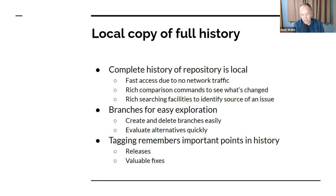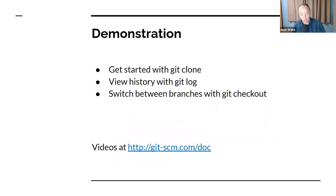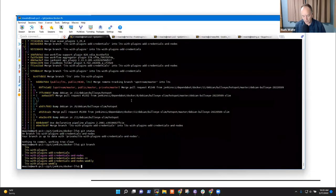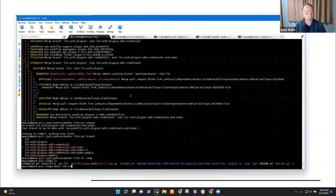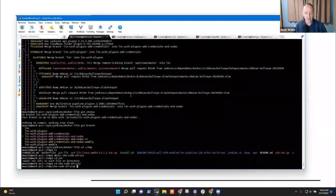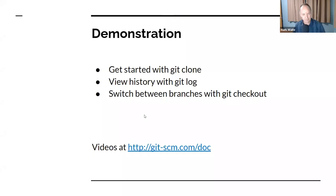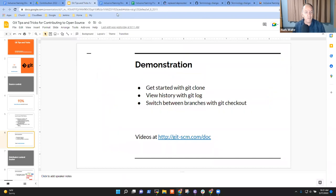Git is an interesting source control system because it provides you a local copy of the entire history of the repository. By being a local copy of the complete history, it gives you very fast access — there's no network traffic to compute the history. Local comparison commands have all the benefits of operating on local copies instead of doing network-based copies to see what's changed. Now let's do a demonstration and we're going to do a git clone.